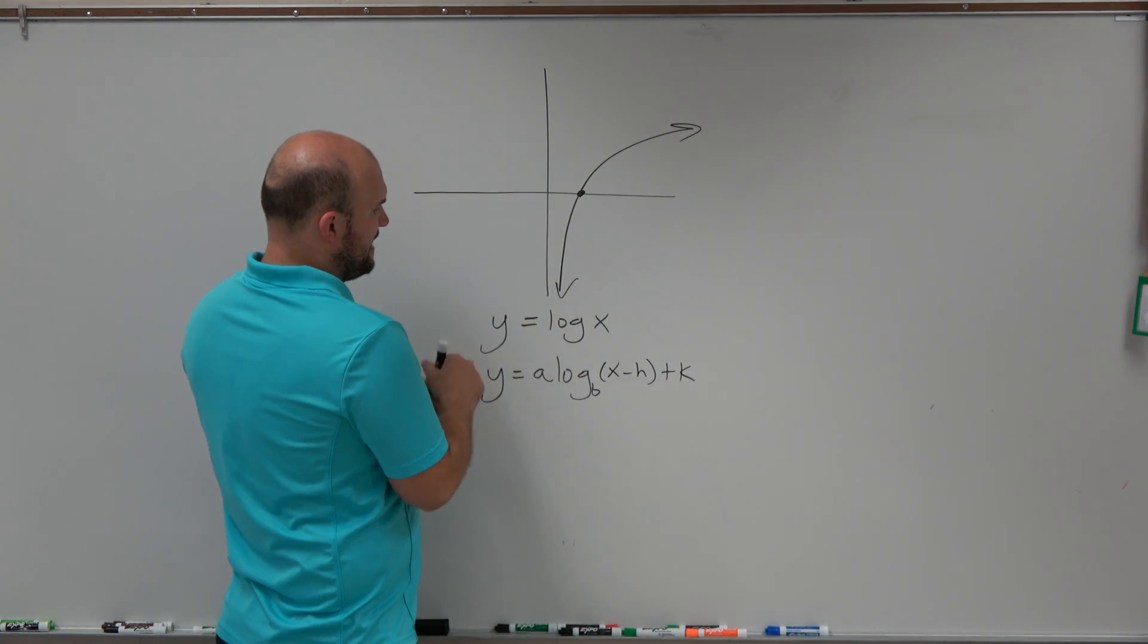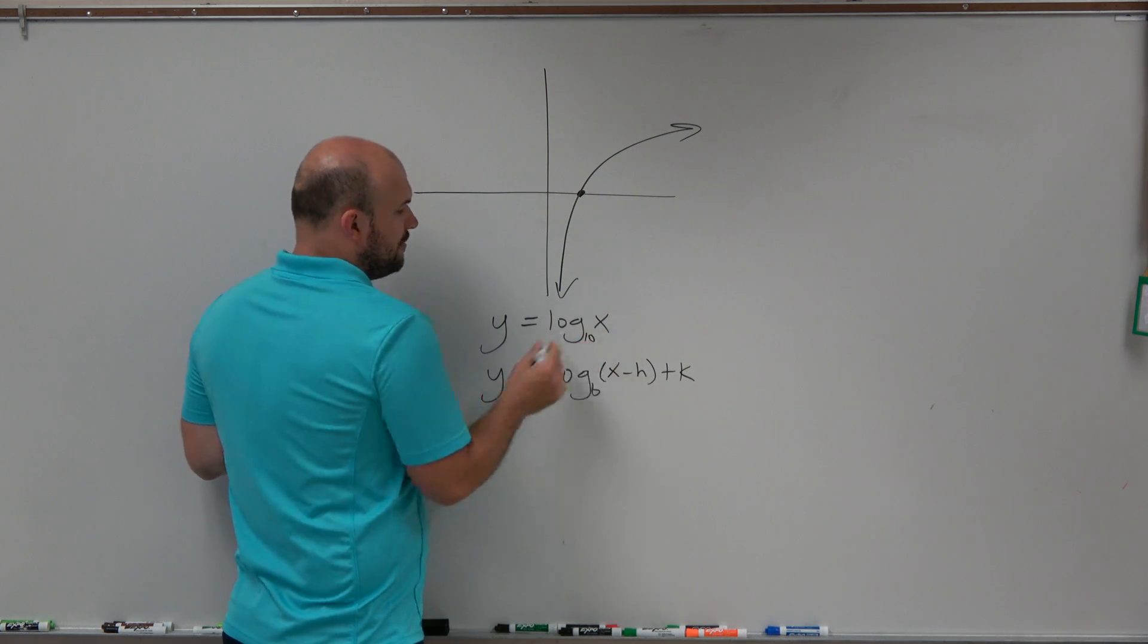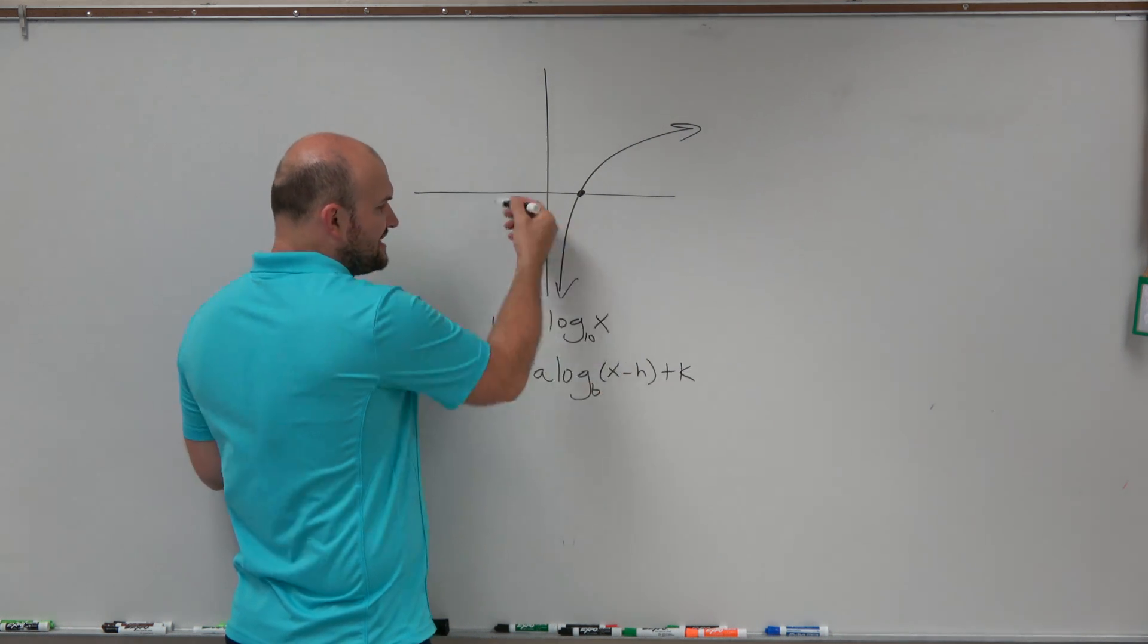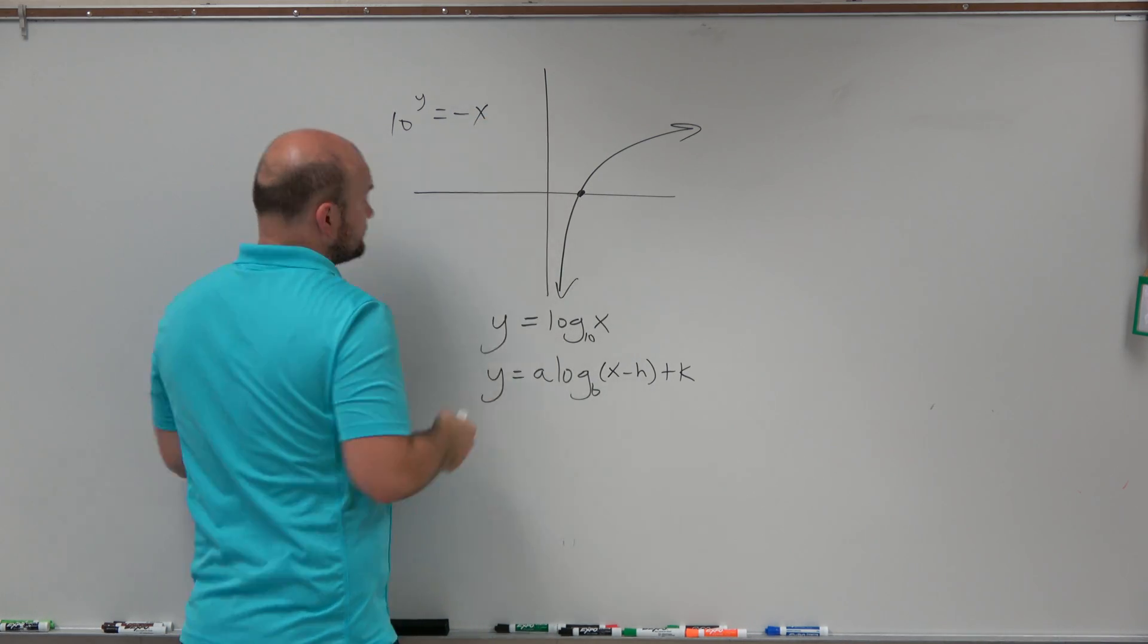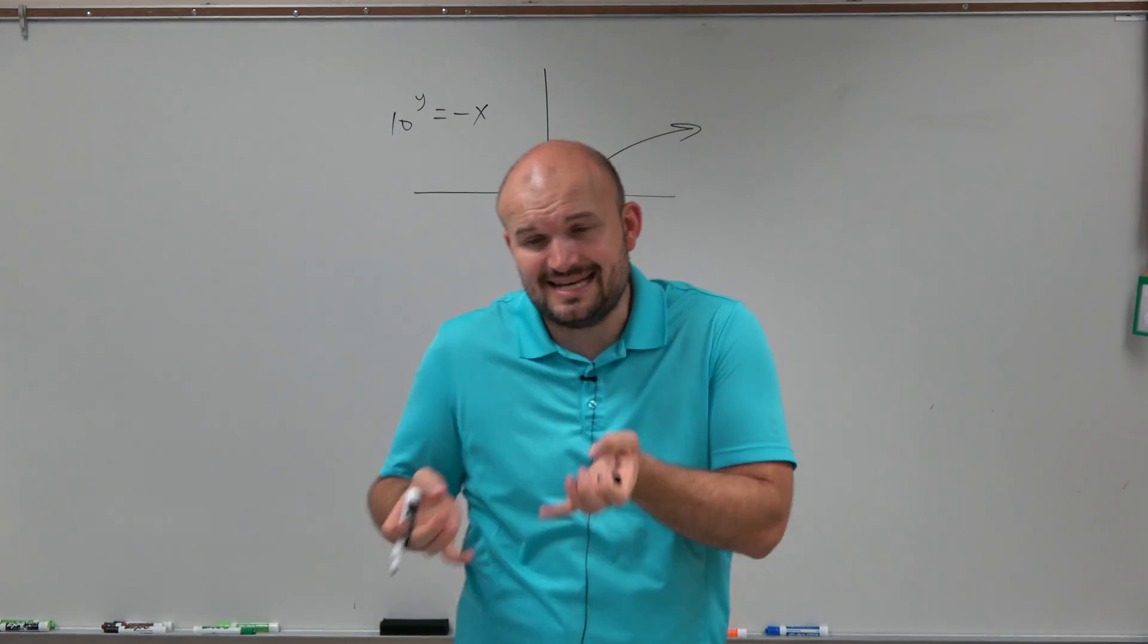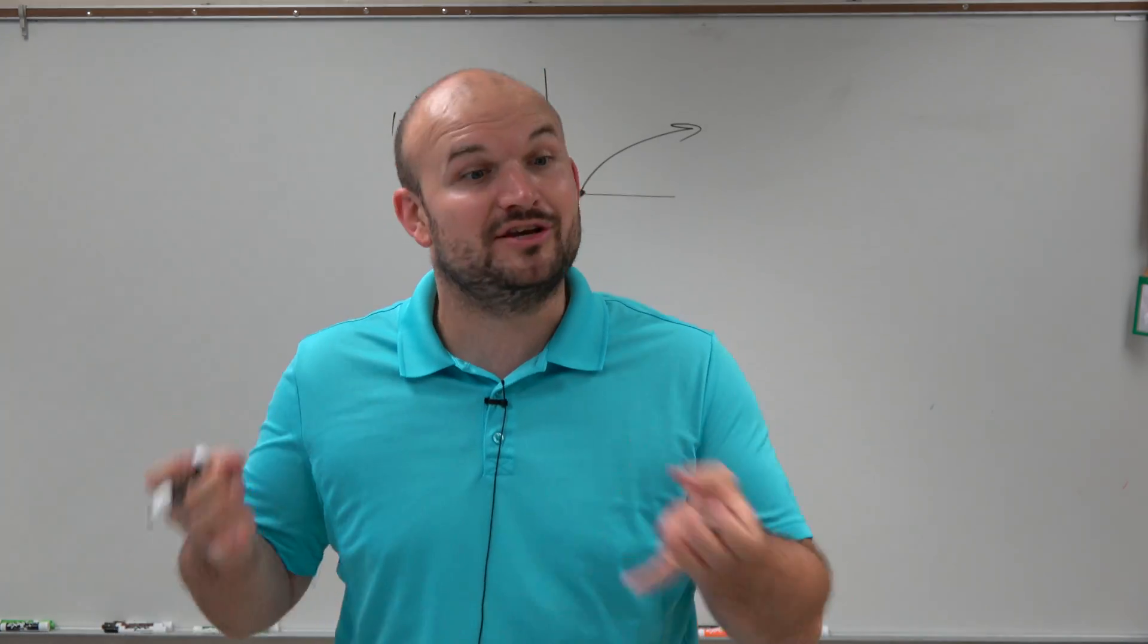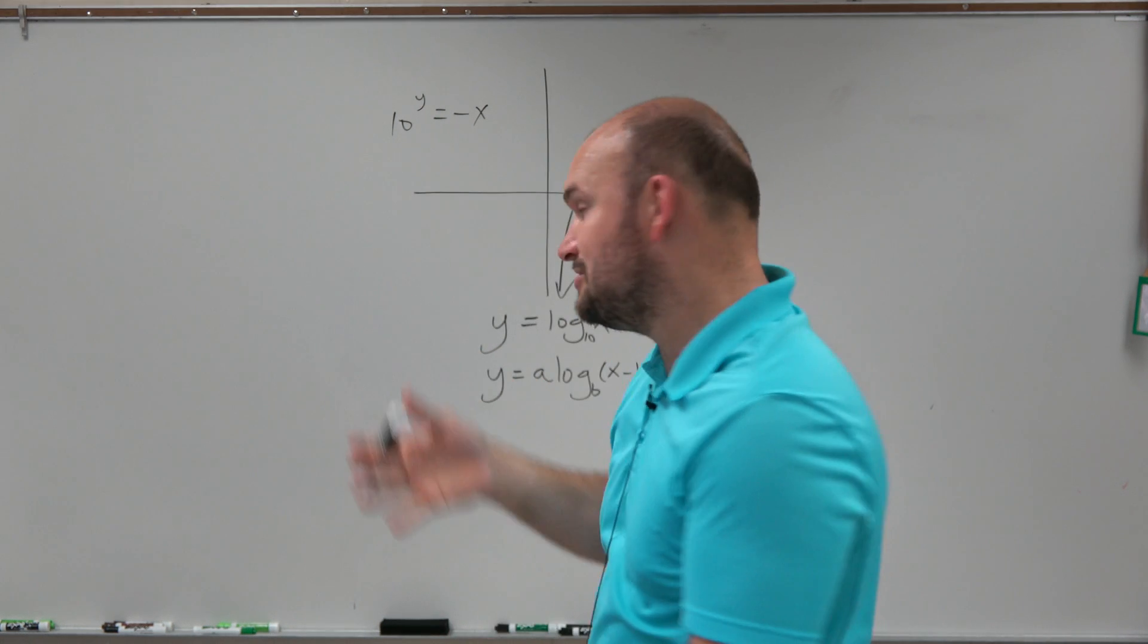And if you look at the equation, that makes sense. Whatever this base is, let's just consider it 10. Remember the logarithm is saying 10 raised to what number gives you x? Well, if x is negative, 10 raised to y equals, let's just say, negative x. You can't take 10 and raise it to any number. There is not a number in our real number system that you can raise it to to be able to get a negative value. So therefore, that's why there is no values here for x.